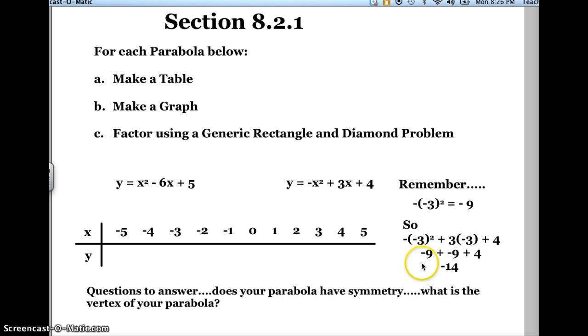Now if I combine those terms, negative 9 and negative 9 and 4 is negative 18 and 4, which is negative 14. So the answer for if x is negative 3 will be negative 14.